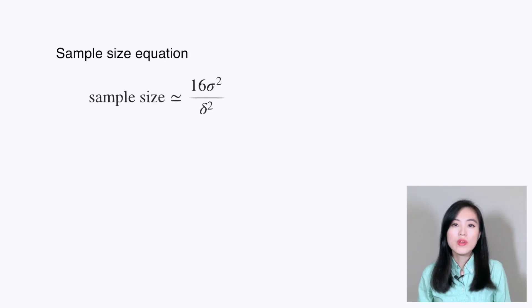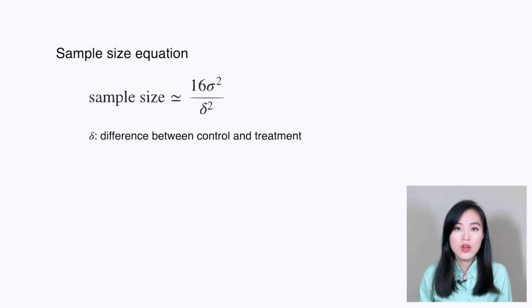In this video, let's go through how to calculate the sample size for A/B tests. We know that the rule of thumb is 16 multiplied by sample variance divided by delta squared, where delta is the difference between control and treatment. Now let's go over how we come up with this formula step by step.